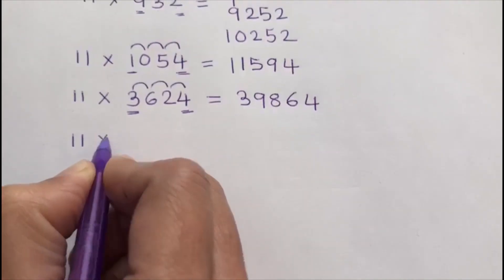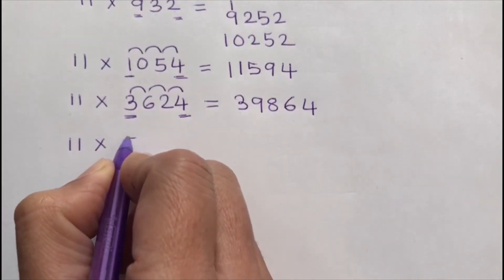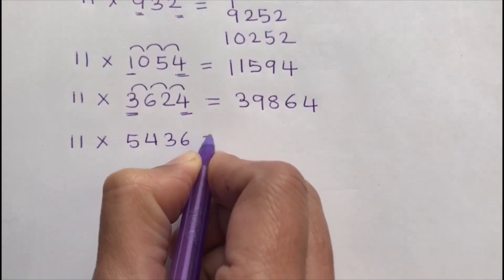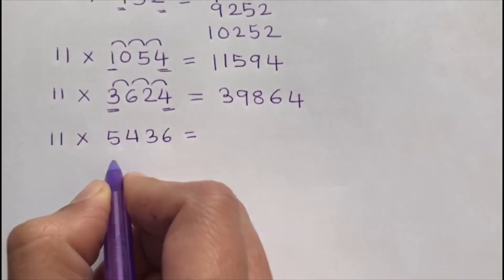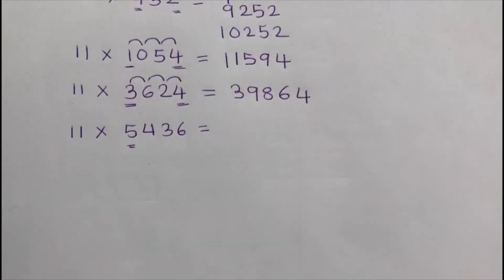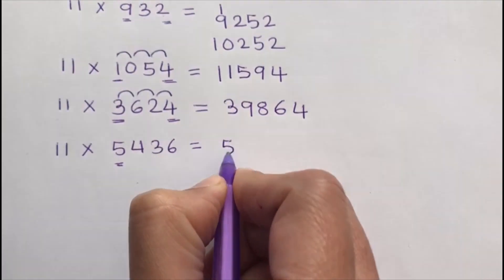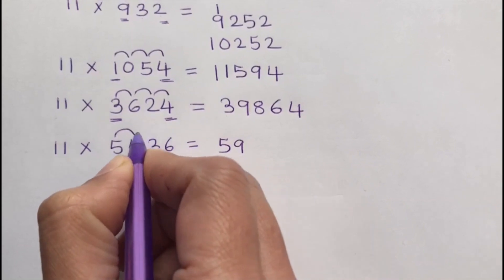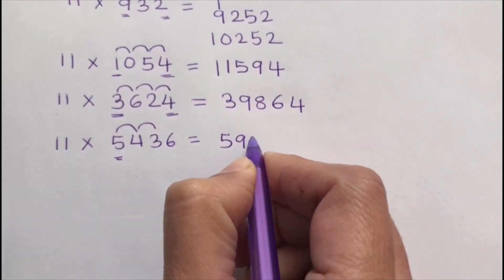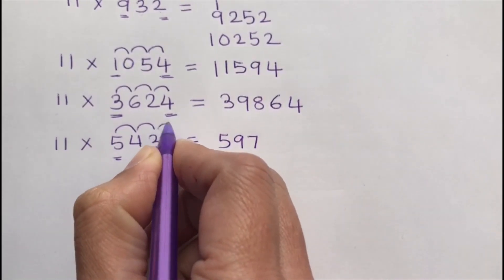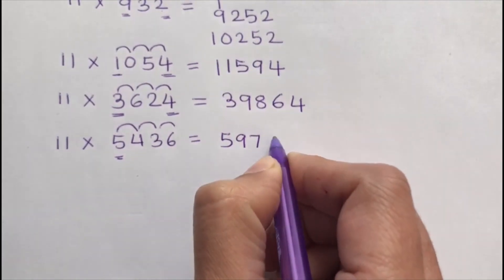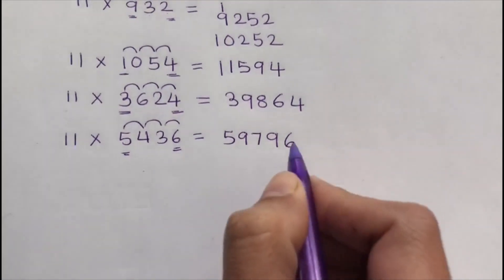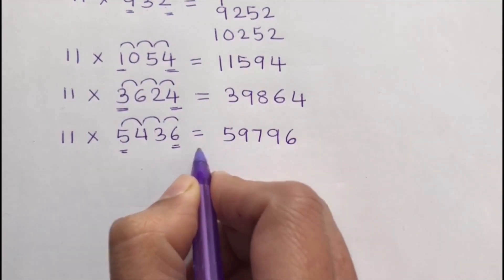Next: 11 times 51436. The first digit is 5, so I write 5. Add 5 and 1, which gives 6. Then add 1 and 4, which gives 5. Then add 4 and 3, which gives 7. Then add 3 and 6, which gives 9. Write the last digit, which is 6. The answer is 565796.